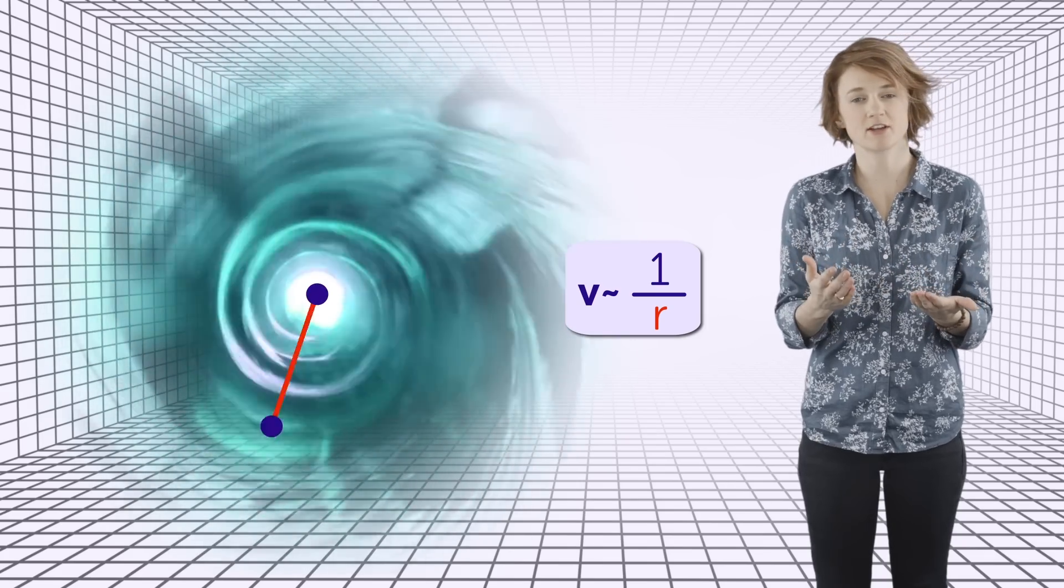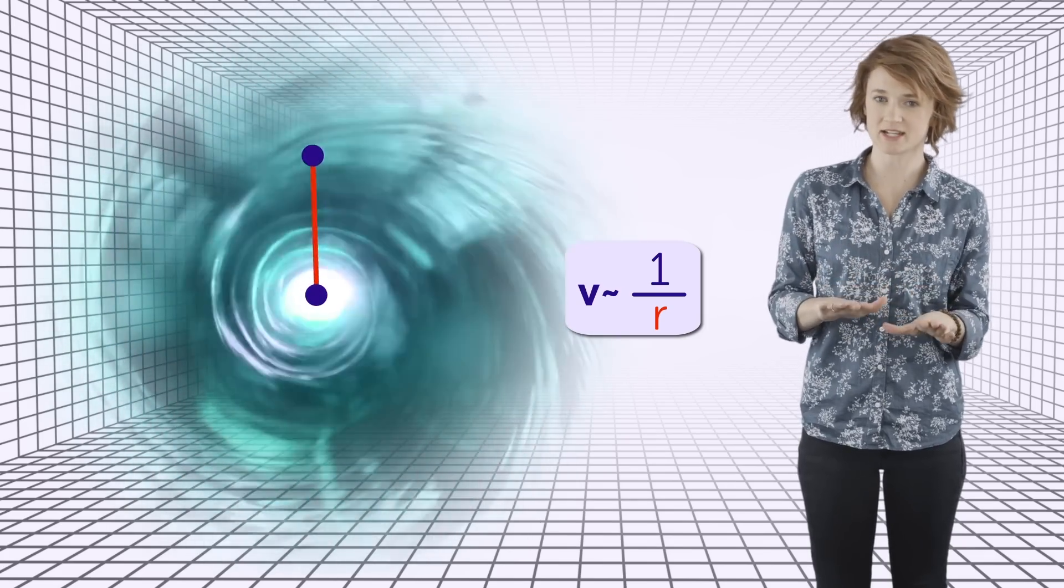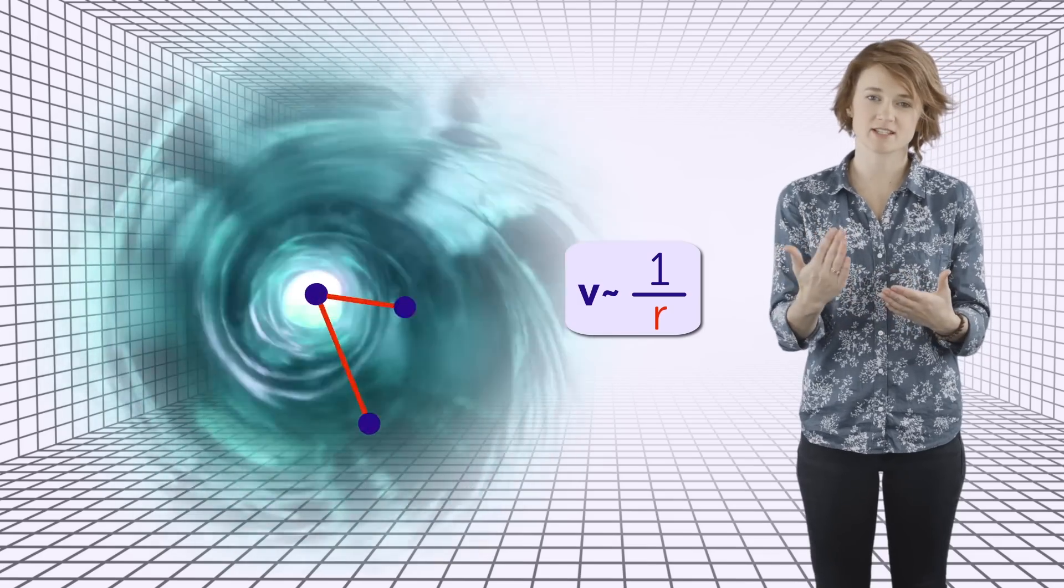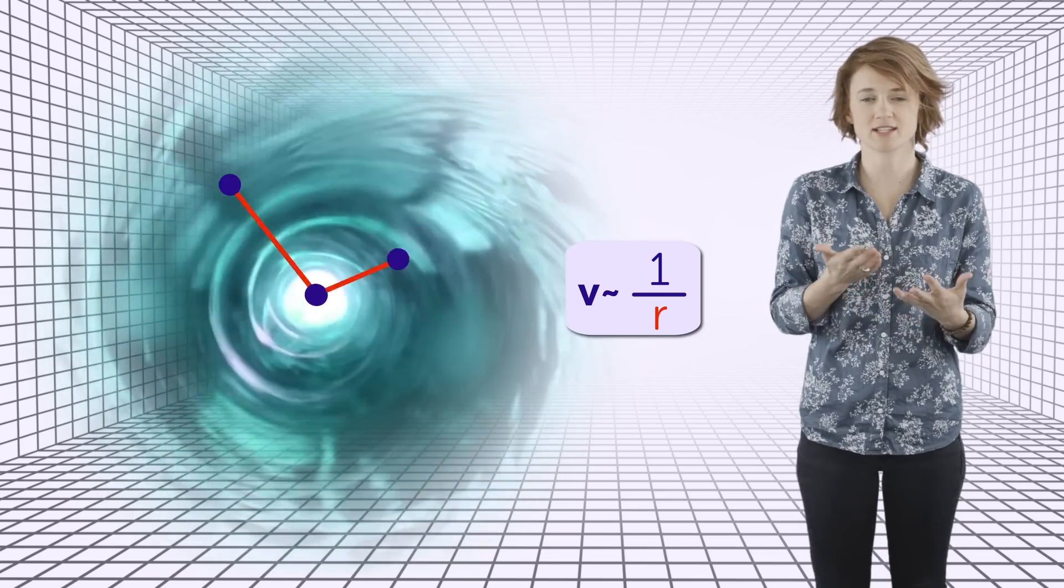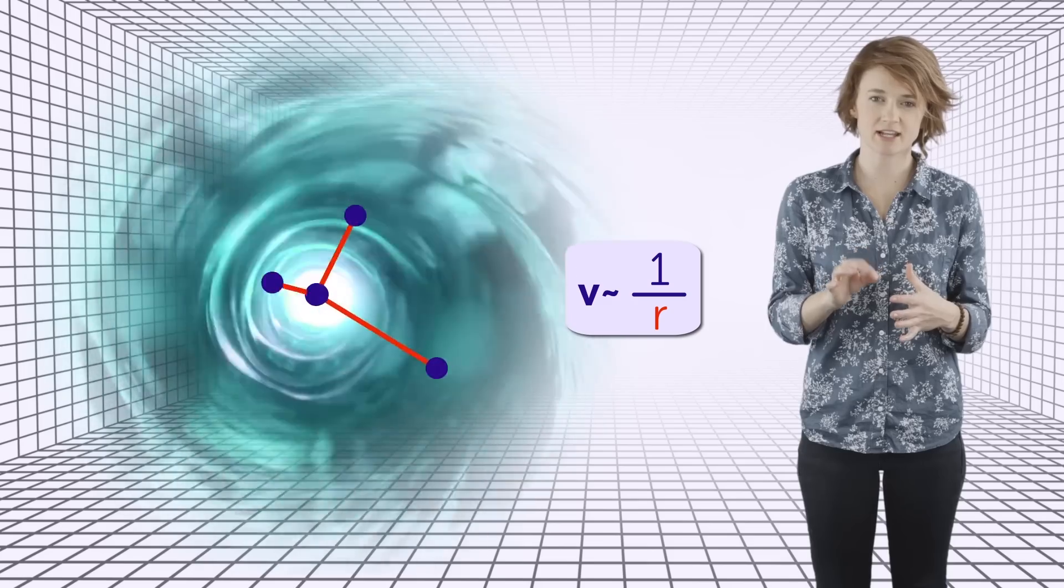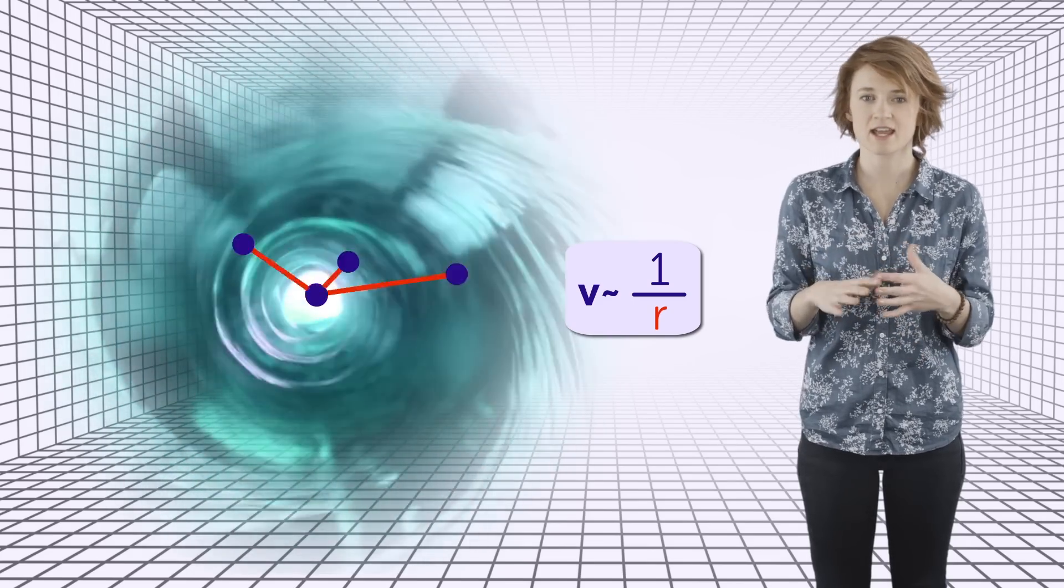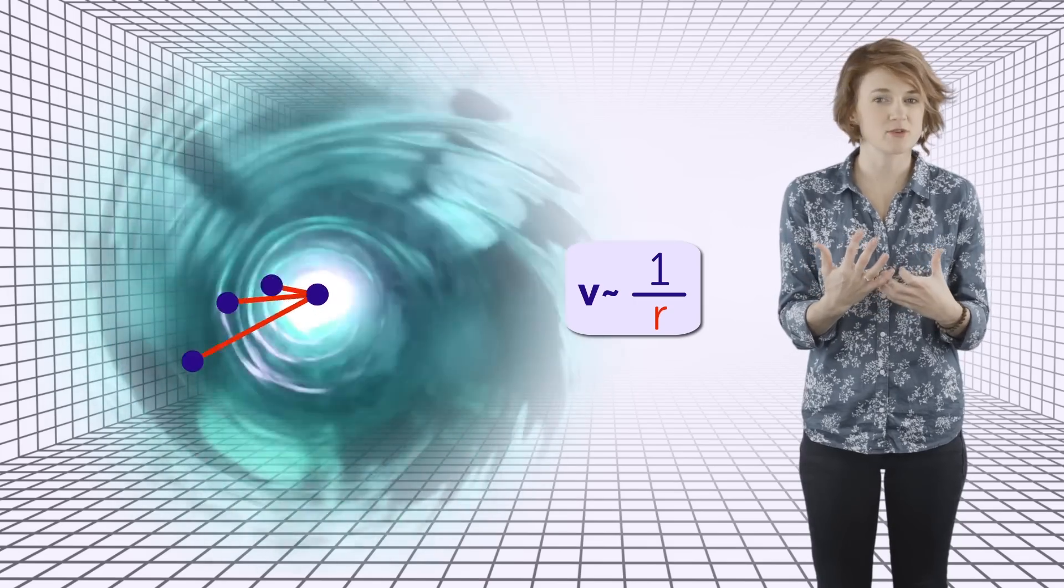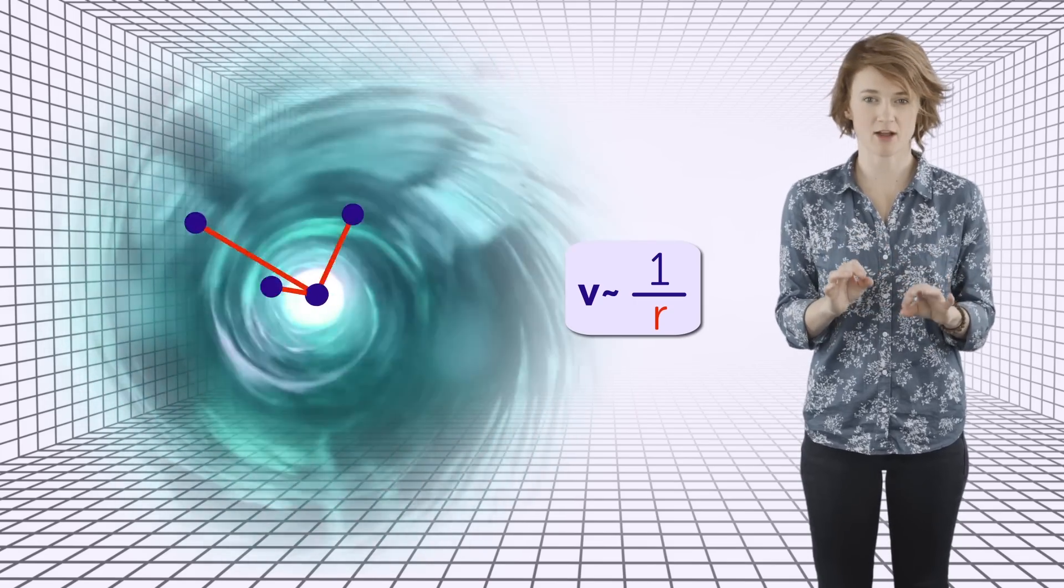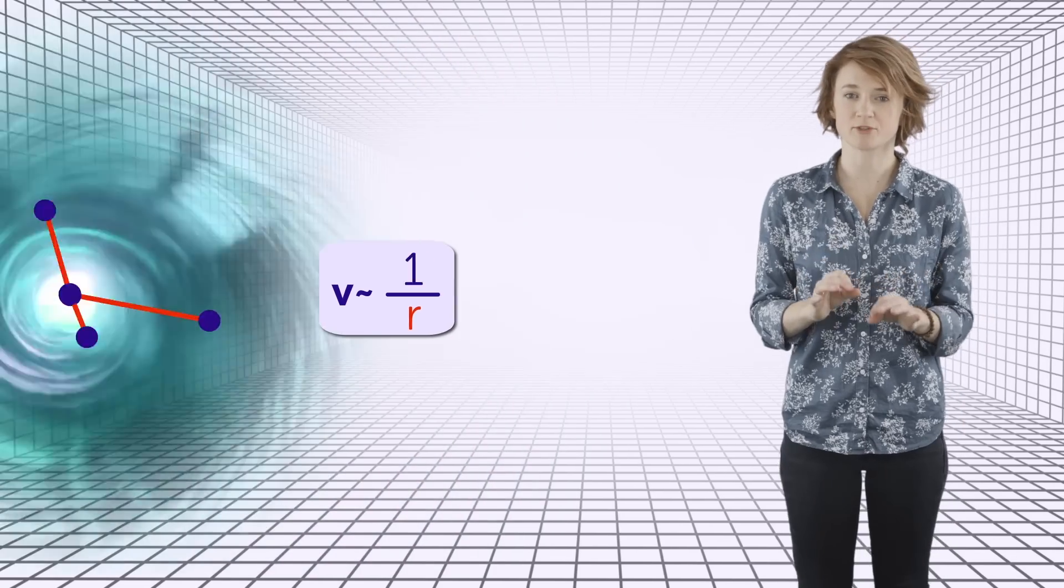This looks a lot like our graph of 1 over x from the beginning. The closer the water gets to the center, the faster the velocity is, approaching a singularity in the center. But a water molecule has a fixed size. It can't get arbitrarily close to the center of a vortex. Unlike with a black hole, physicists have been able to resolve the vortex singularity, explaining the difference between this idealized model of a vortex and its actual physical nature.